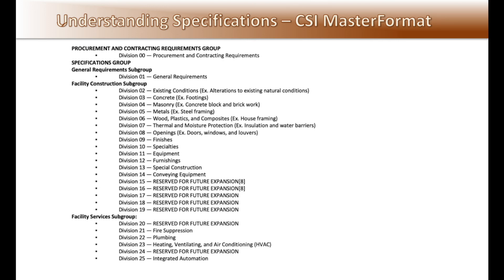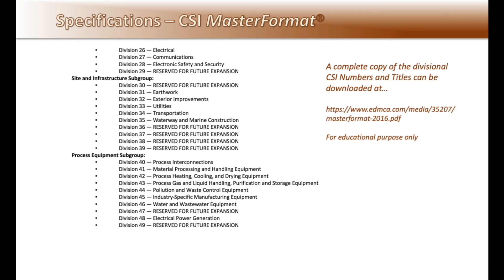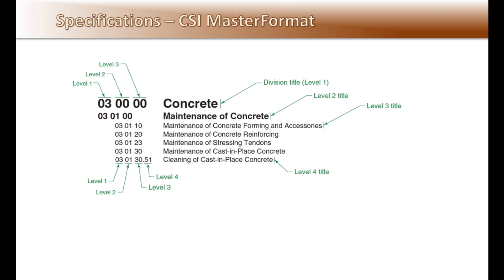See pages 364 and 365 in the book. Some divisions are reserved for future expansion. This numbering system makes finding information related to project areas of work and materials much more consistent. A complete copy of the divisional CSI numbering and titles can be downloaded at the noted website. The Master Format uses a six-digit system. The first two numbers designate the main divisional area — like 03 for concrete — which is Level 1. Levels 2 and 3 are further breakdowns of the related basic topic, and Level 4 is used to further break down a specific topic when needed.